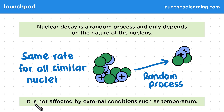Nuclear decay is not affected by external conditions such as temperature. This makes nuclear decay much more unpredictable, as we can't speed it up or slow it down ourselves — it's not in our control. This is a really important point that you need to know as it may come up in your exams.